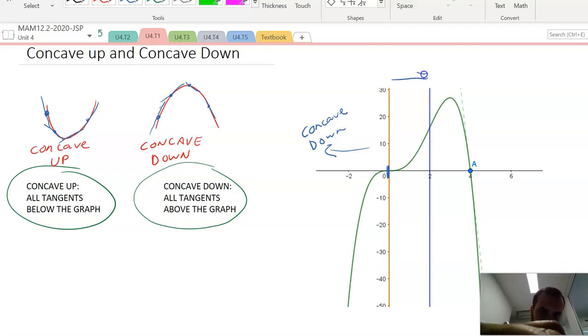In this portion of the graph right there, the tangents are all below our graph. So we can say from that portion, it's concave up. Sorry about that.